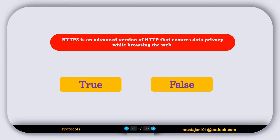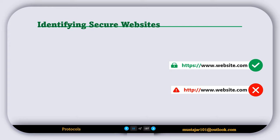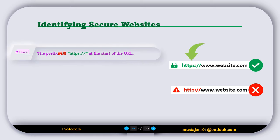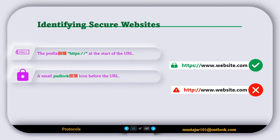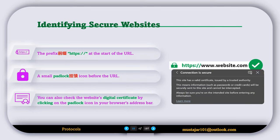True or False: HTTPS is an advanced version of HTTP that ensures data privacy while browsing the web. This statement is true. Secure websites use HTTPS protocol. You can verify if a website is secure by two indicators: the prefix HTTPS at the start of the URL, and a padlock icon before the URL. You can also verify the website's digital certificate by clicking on the padlock icon in the browser's address bar.